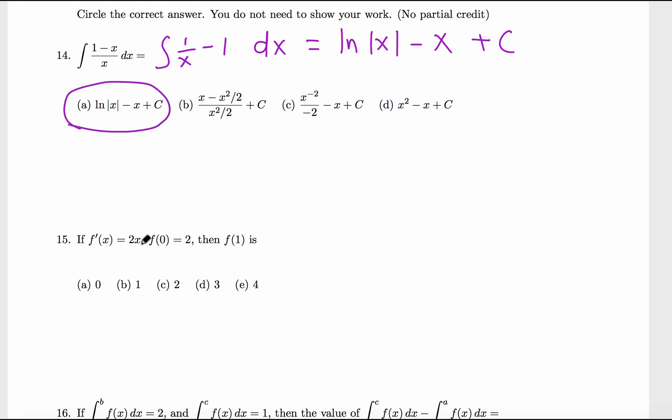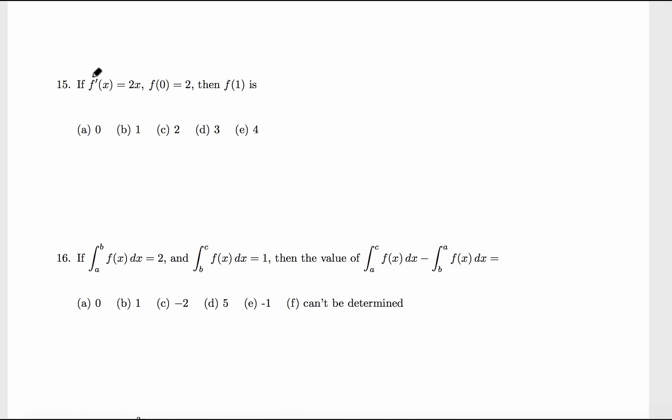In 15, the derivative of f, f prime is 2x, and f at 0 is 2. Now we need to find f(1). So first we need to find the function f itself, then we can evaluate f(x) at x equals 1.